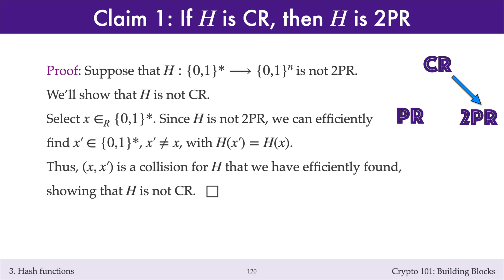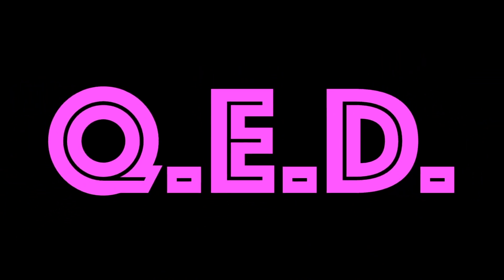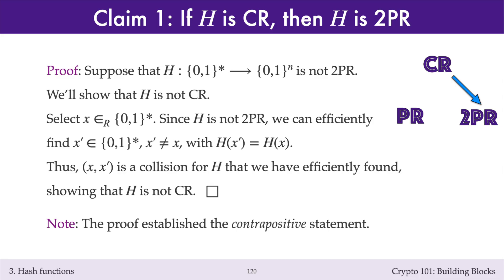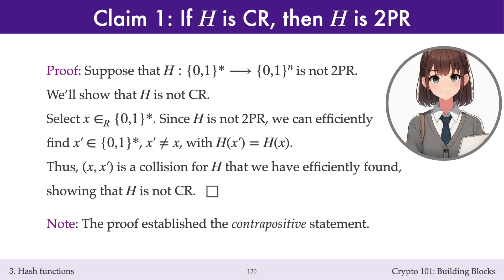Suppose that h is a hash function that is not second pre-image resistant. Randomly select the message x. Since h is not second pre-image resistant, we can efficiently find a second message x-primed different from x with the same hash value as x. Now x and x-primed is a collision for h, and so we have efficiently found a collision for h. This shows that h is not collision resistant. The proof establishes the contrapositive statement. Whenever you prove security implications like this, it's always better to prove the contrapositive statement.